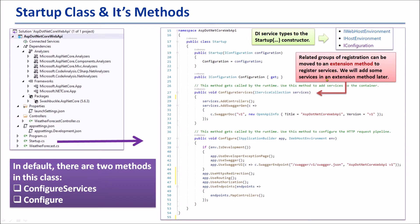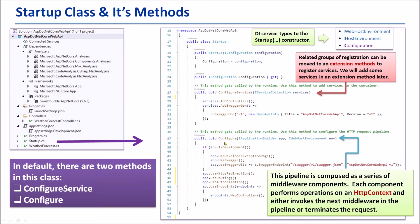We will add some services in an extension method later. The second method is Configure. This method is used to configure the HTTP request pipeline. This pipeline is composed as a series of middleware components. Each component performs operations on an HTTP context and either invokes the next middleware in the pipeline or terminates the request. All requests come inside this method and the related middleware processes those requests — so we call this the request processing pipeline. These two methods are very important at the starting point of the application. In the next section, we will customize this application by adding services in extension methods.